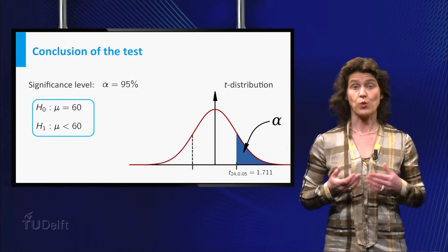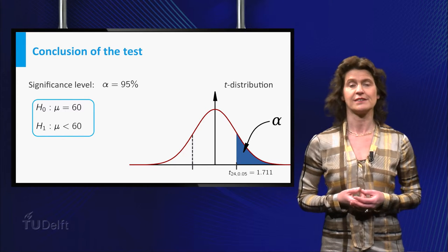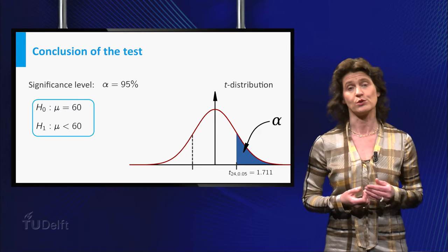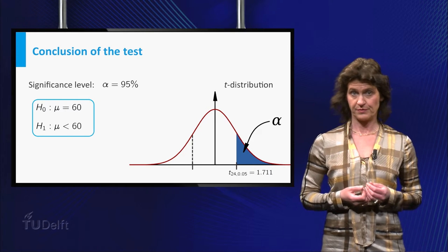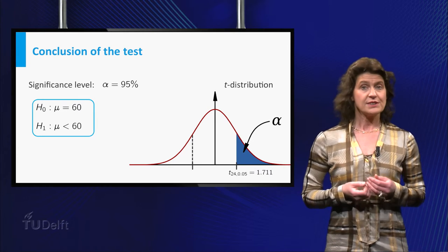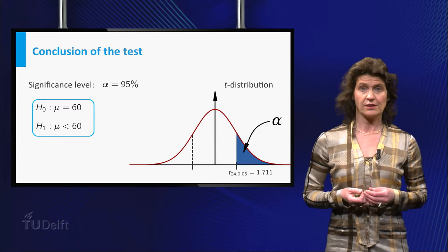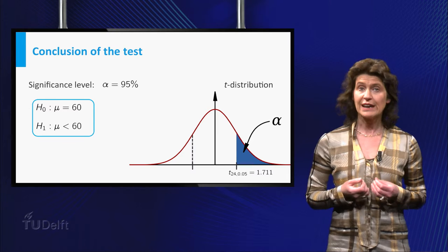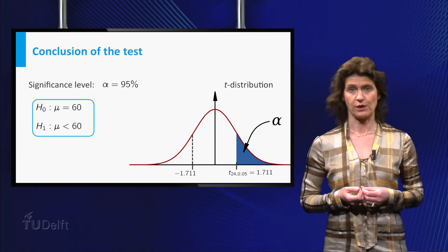Because the test is one-sided, you need to take the critical value of the t24 distribution at alpha equals 0.05. Because the t-distribution is symmetric, you compare the value minus 2 of your test statistic to the left critical value minus 1.711.